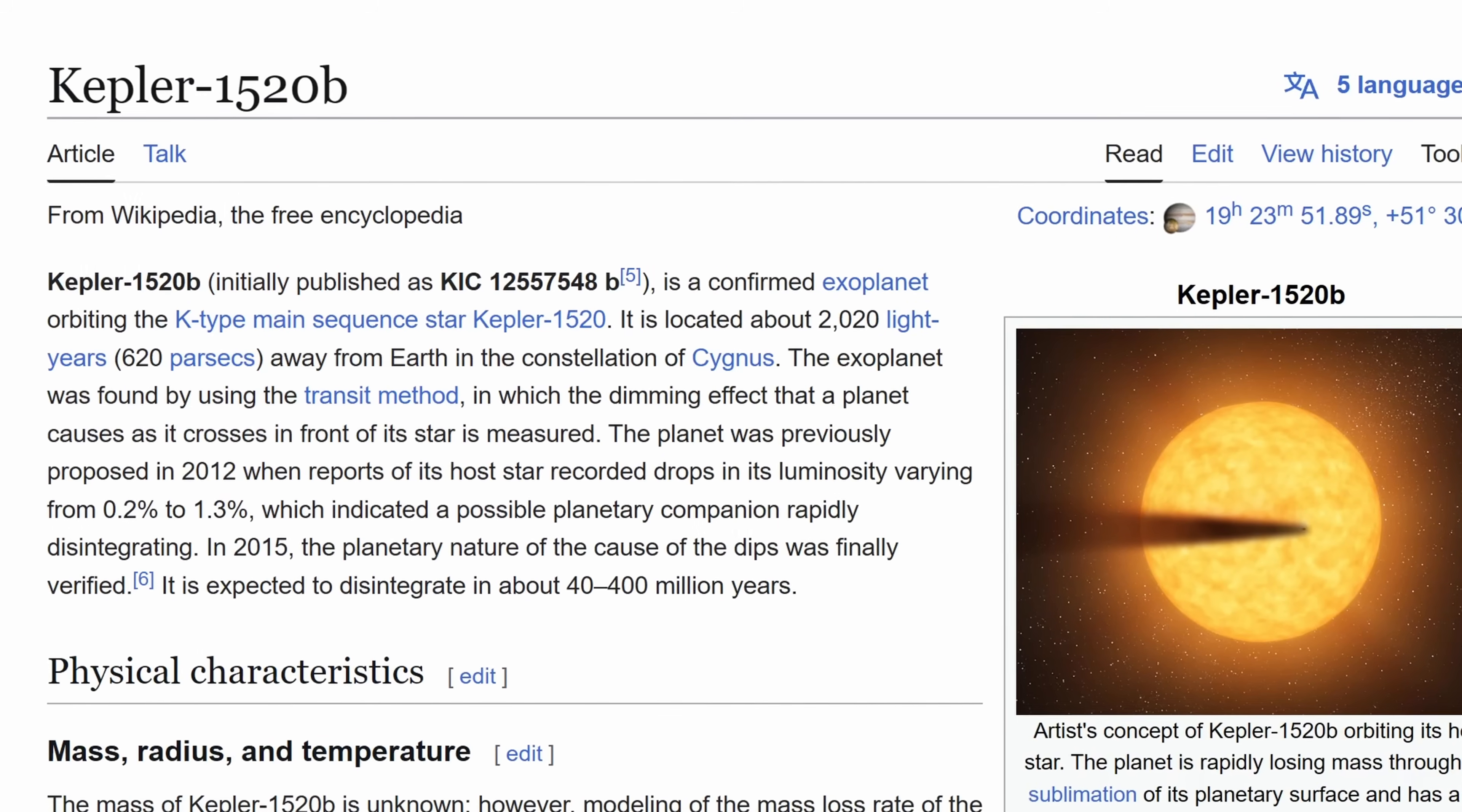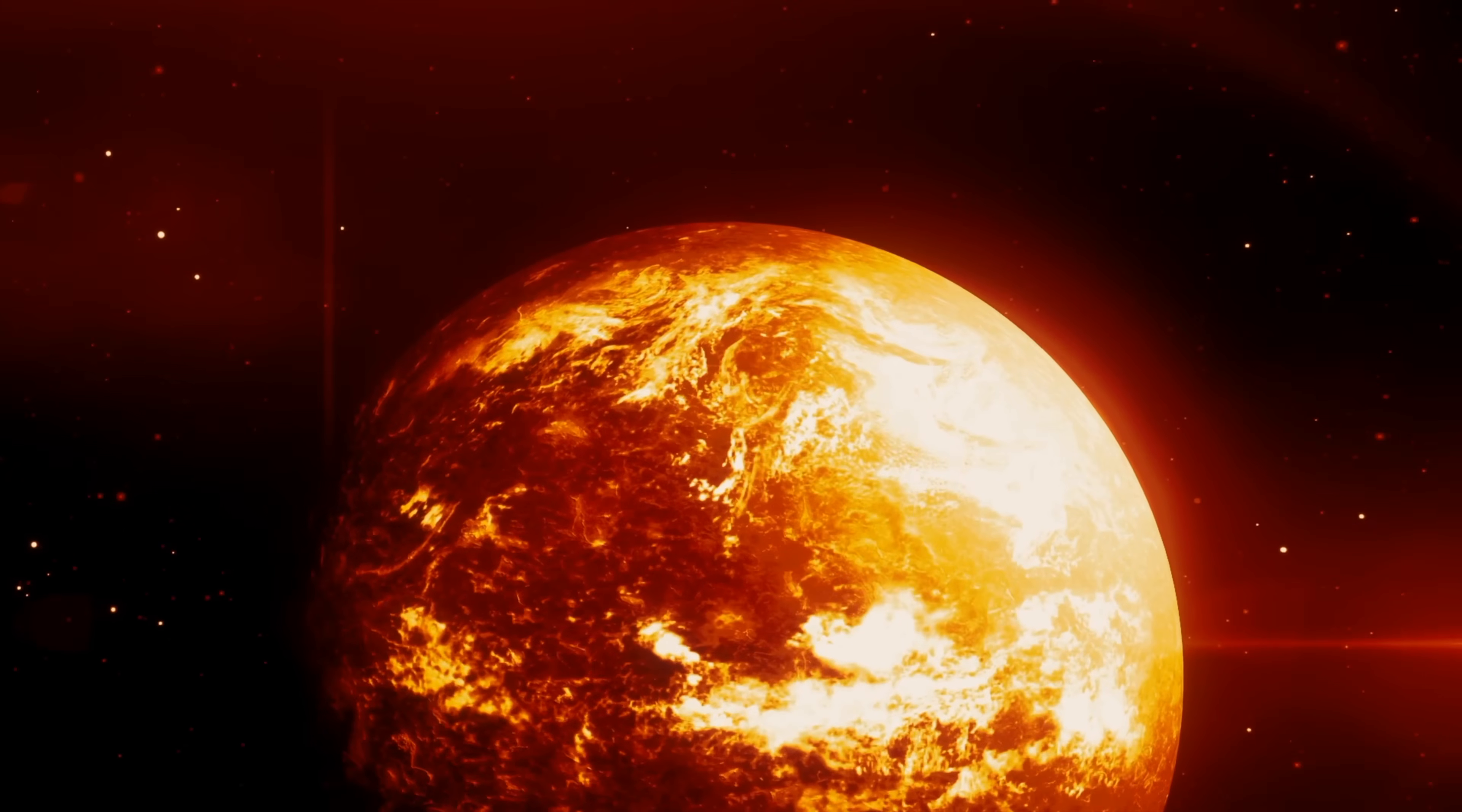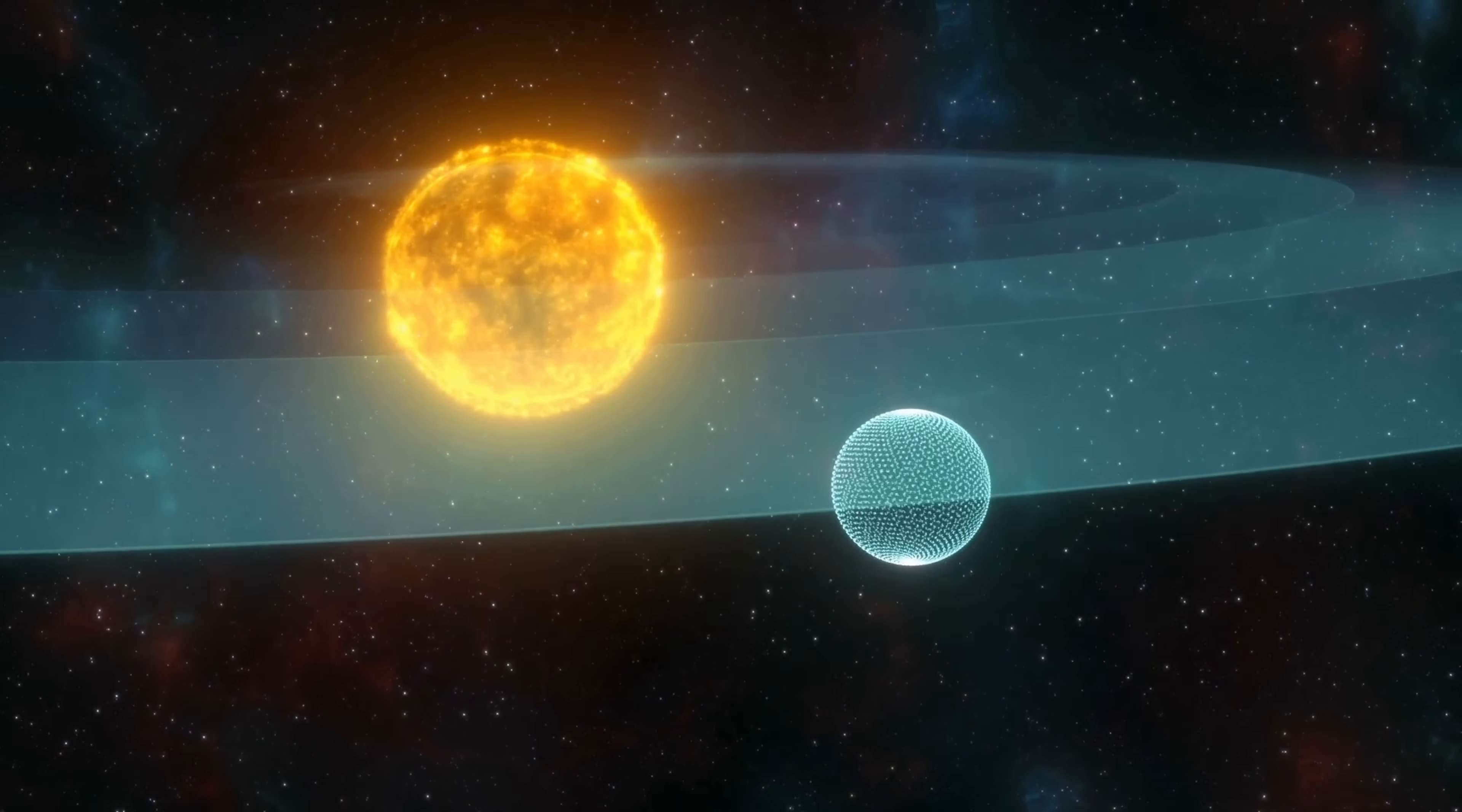One of the first known examples, Kepler 1520b, might actually survive for at least another 400 million years. With the other planet, KOI 2700b, very likely surviving much longer, several billion years. And the third example, K2-22b, may be disappearing in about 21 million years in the future.